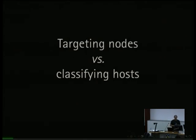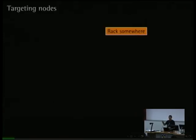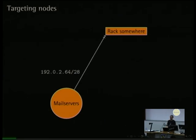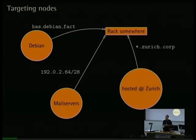There's another difference I pick up when interacting with communities: the differentiation between targeting nodes and classifying them. With modern tools, what you should be doing is targeting. You have this rack out there, and you have the task of providing mail servers, so you say: let me target the role of mail servers at all of the hosts in this subnet, or target the role of being a Debian node at all nodes that have a certain fact called Debian. Now I think this is backwards.